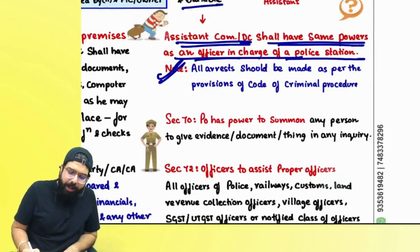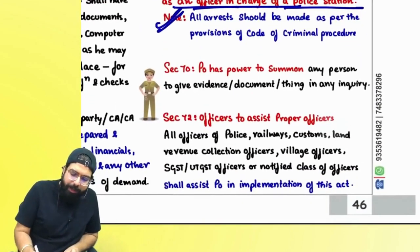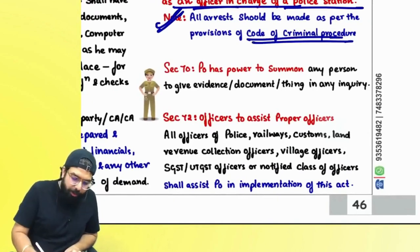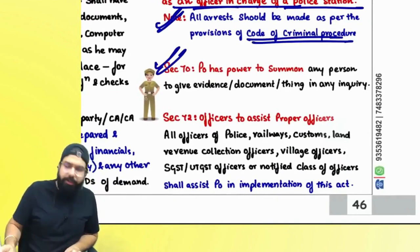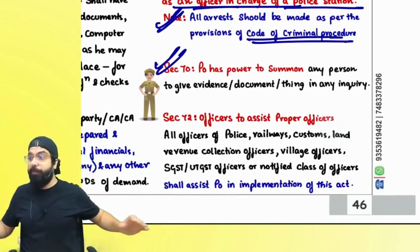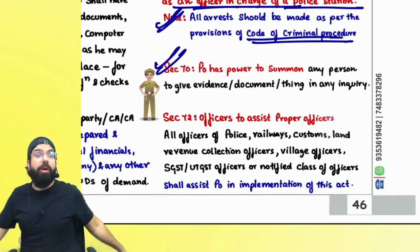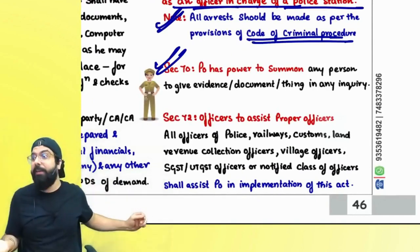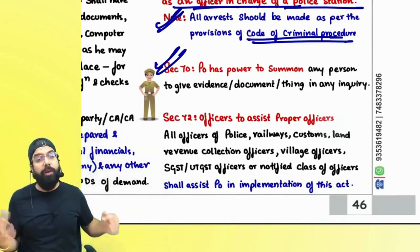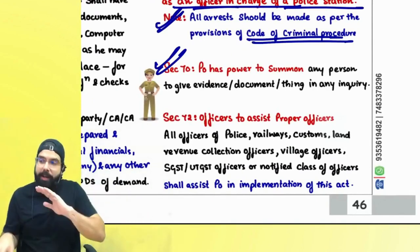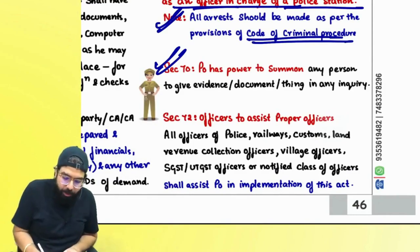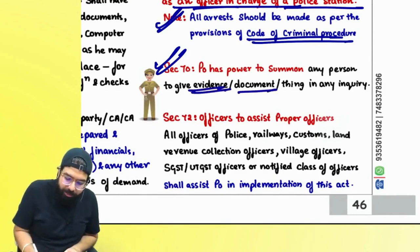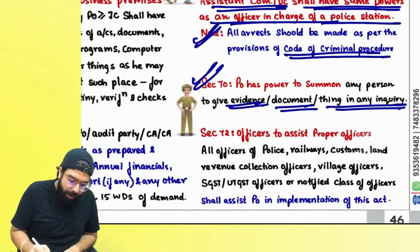All arrests are to be made as per the Code of Criminal Procedure. Section 70 says the proper officer can summon any person — he can go ahead and summon any person to give evidence, documents, and things in an inquiry.